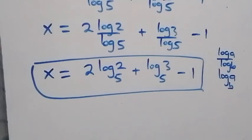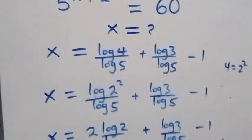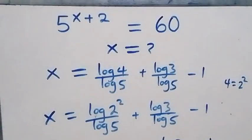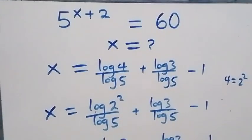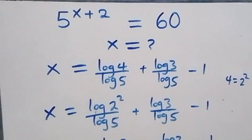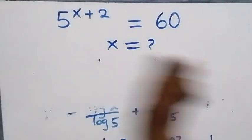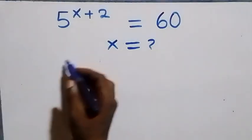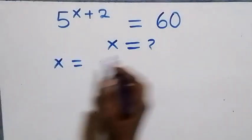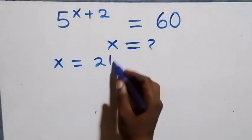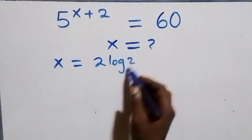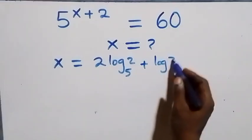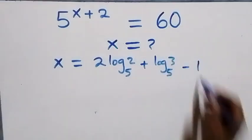Now let's check if this satisfies the given problem. We substitute the value of x, which is x equals 2 log₅2 plus log₅3 minus 1, back into the original equation.